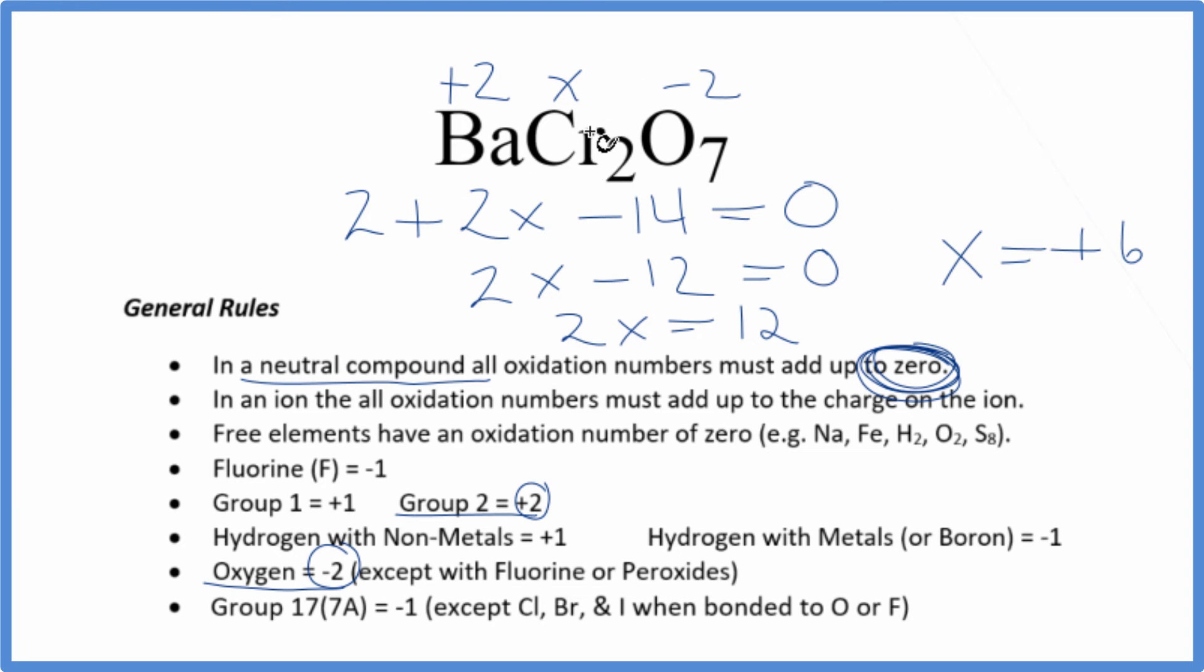So the oxidation number on each of these chromium atoms is going to be a positive six. All of these oxidation numbers are going to add up to zero because this is a neutral compound. We should note that the Cr2O7 right here, this is the dichromate ion. It does have a two minus ionic charge, so you could have used this rule here to try to figure it out.